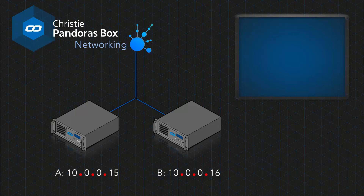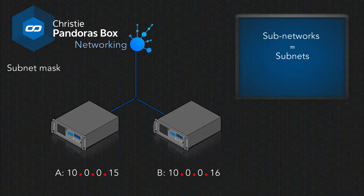There is one more thing we have to configure. Similar to country and region codes in a telephone number, IP addresses also have a notation for subnetworks, called subnets. To tell the computer the locally reachable IP addresses, you have to set a subnet mask. The subnet mask generally consists of 255s and 0s. In our example, we want all machines starting with 10.0.0.X to communicate, so the required subnet mask would be 255.255.255.0. A 255 means that the number in that position must match on all machines for them to communicate directly.